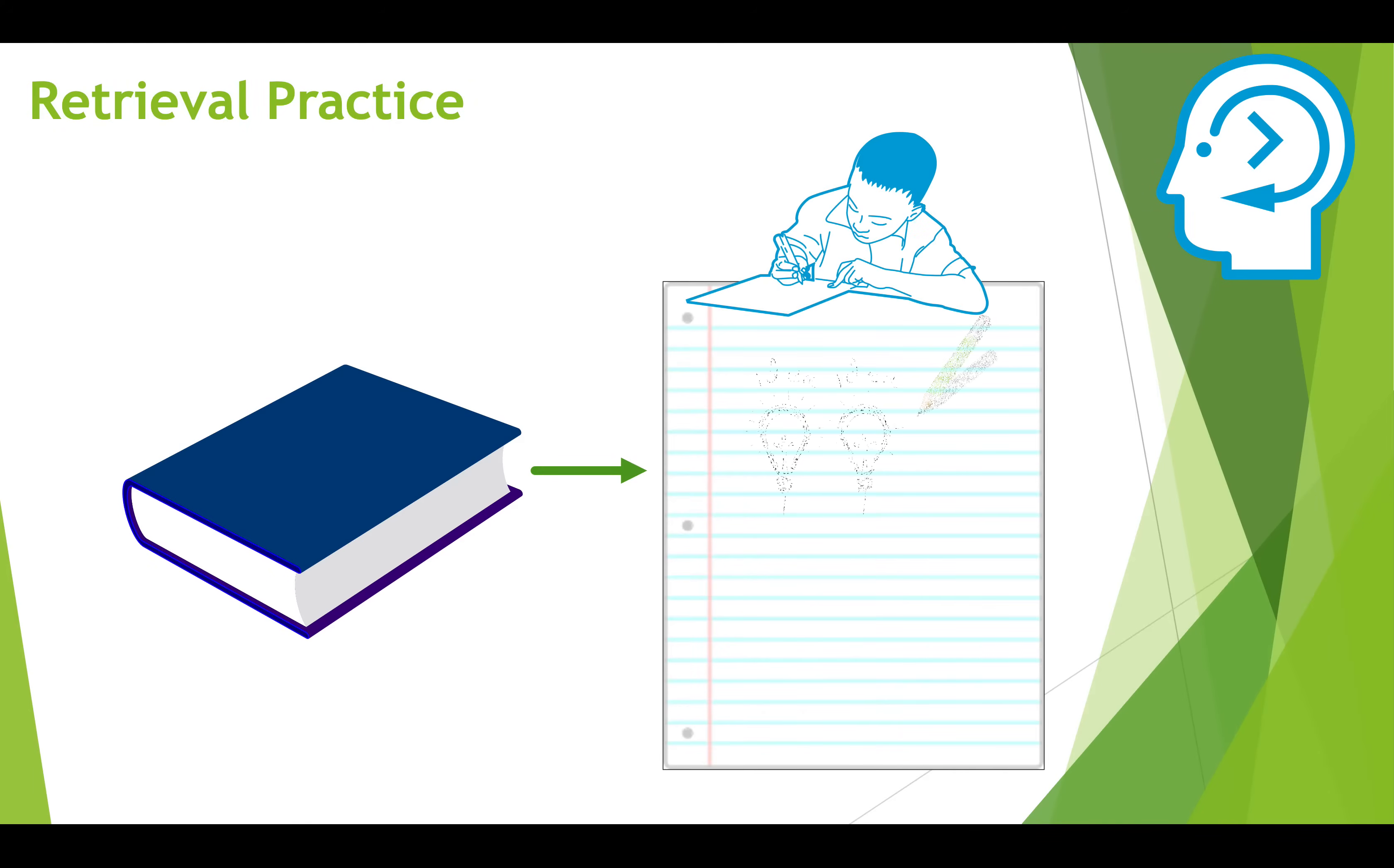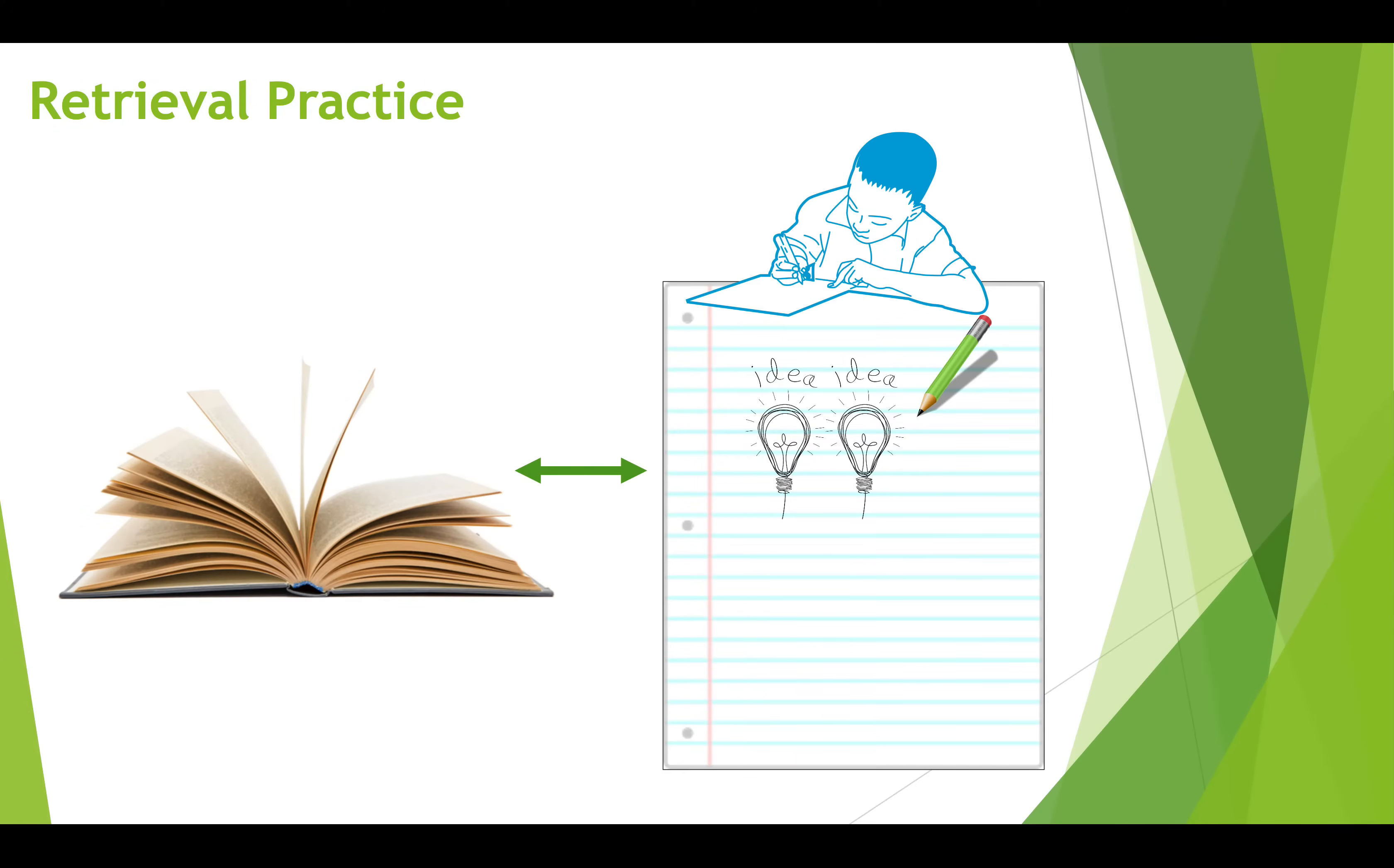Then you can try to sketch or write out as much of the information as you can remember. Once you've written everything out or drawn everything that you can, you can open the book and check to make sure that you got everything right, see what you need to work on more.